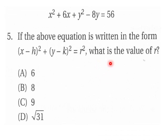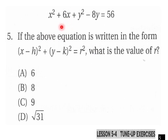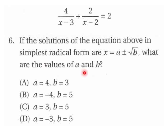Number five: If the above equation is written in the form like this here, x minus h plus y minus k squared equals r squared, what is the value of r in this situation here? So that's a good question.